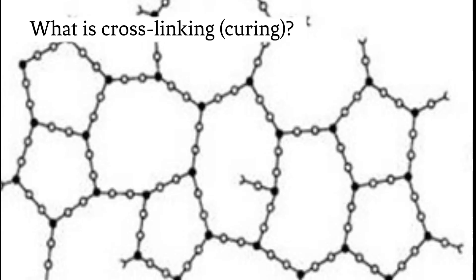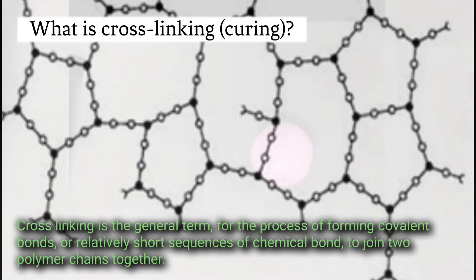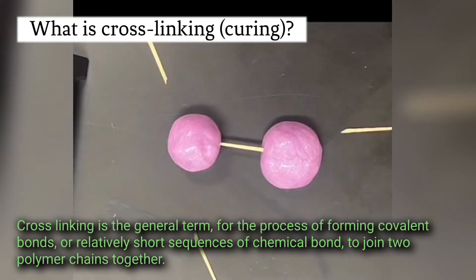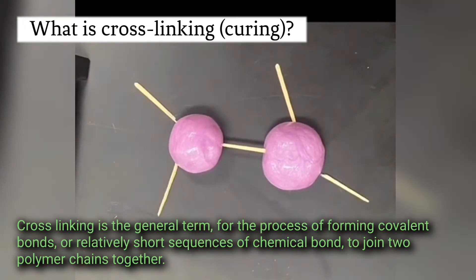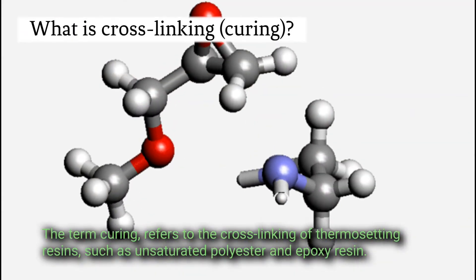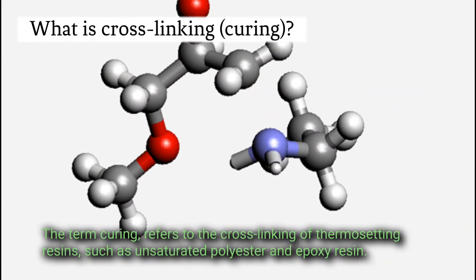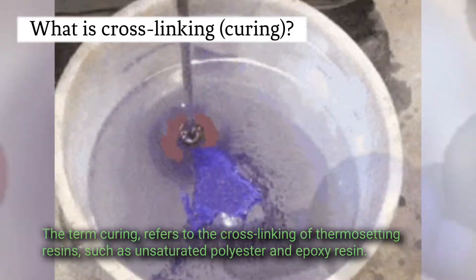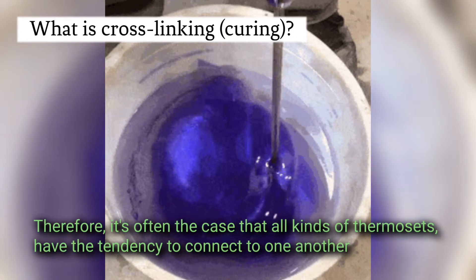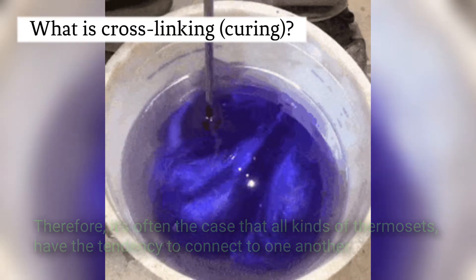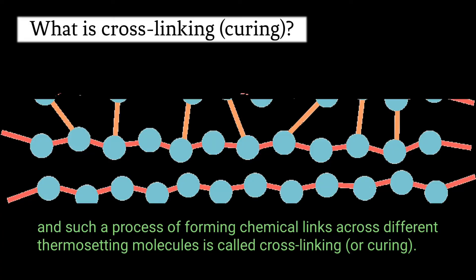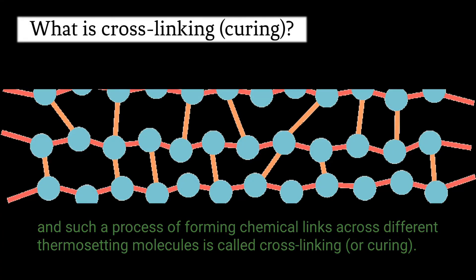What is cross-linking curing? Cross-linking is the general term for the process of forming covalent bonds or relatively short sequences of chemical bonds to join two polymer chains together. The term curing refers to the cross-linking of thermosetting resins such as unsaturated polyester and epoxy resin. Therefore, it is often the case that all kinds of thermoset have the tendency to connect to one another, and such a process of forming chemical links across different thermosetting molecules is called cross-linking or curing.